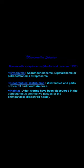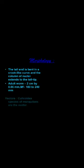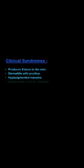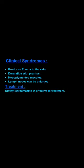Coming to Mansonella species — also called Dipetalonema — it is not commonly seen in India but is found in parts of Central and South America. Adult worms are present in the connective tissues; the adult female is around 6 centimeters and male around 2 centimeters. Vectors are mosquitoes belonging to the genus Culicoides. The disease presents as subcutaneous nodules, dermatitis with pruritus, hypopigmented macules, and sometimes enlarged regional lymph nodes. Treatment is diethylcarbamazine.